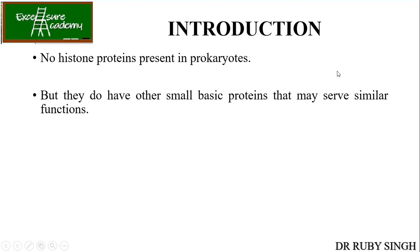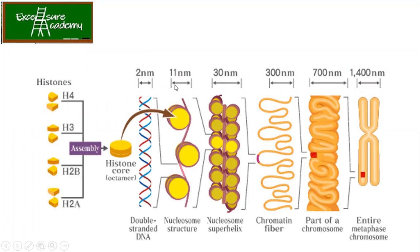In the case of prokaryotes, there are no histone proteins, but they have similar basic proteins serving similar functions. Remember, this question has come in exams — prokaryotes do not have histone proteins, but similar basic proteins are present. There are four different types of histones: H1, H2, H3, and H4. They form an octamer and the DNA wraps around them. From 2 nanometers it becomes 11 nanometers, then forms a superhelix structure, producing the chromatin fiber visible in the microscope, and finally the highly compacted chromosome.